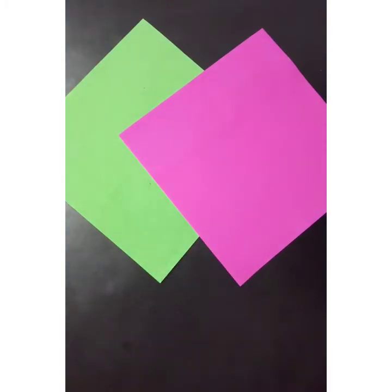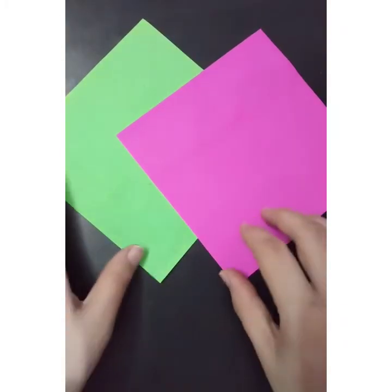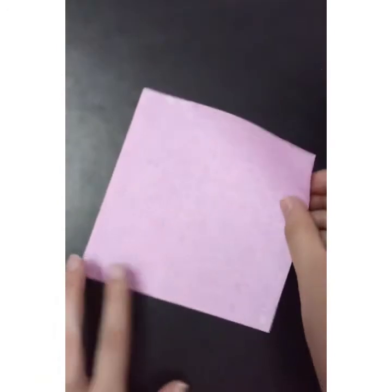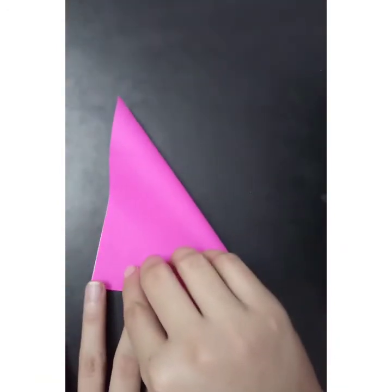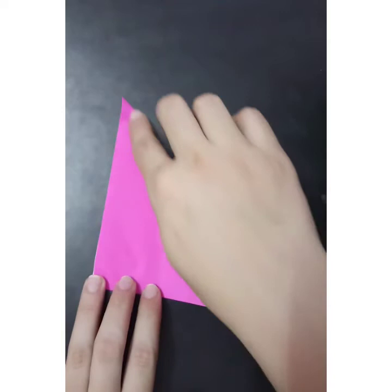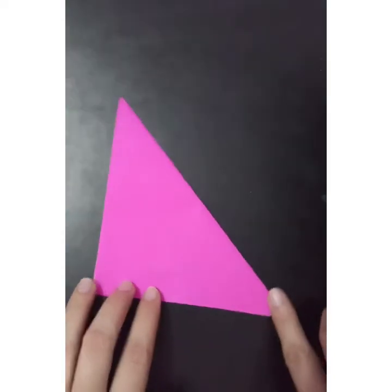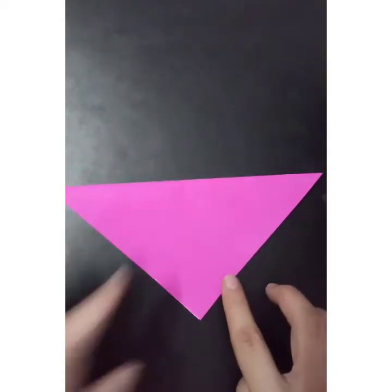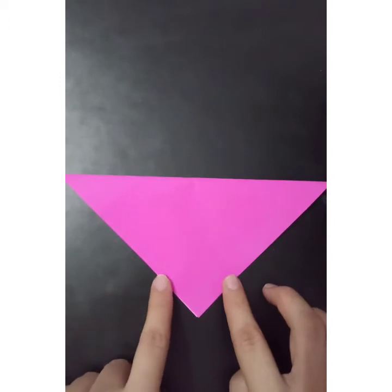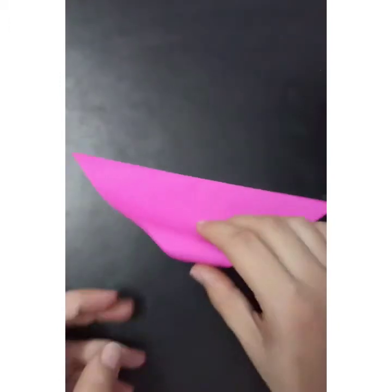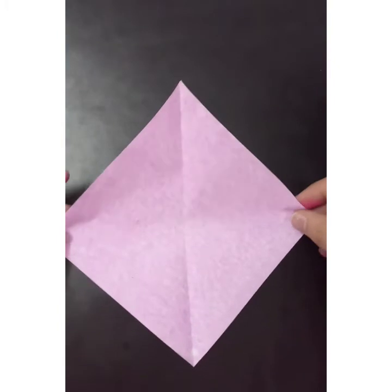First of all we have to prepare one flower. So you have to fold the one sheet like this, opposite sides, and you can see this is the shape of triangle. Good. Now open this and fold it again opposite the side like this.